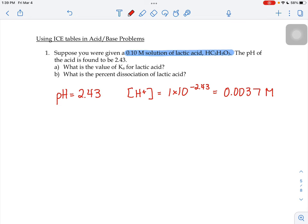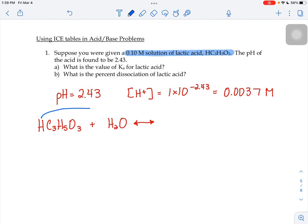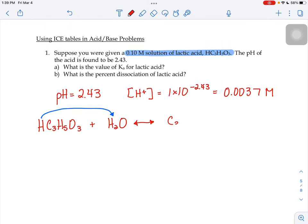So what I'm going to do is use an ICE table to help me figure out the Ka value. I'm going to take my lactic acid, and I'm going to put lactic acid in water. And my lactic acid is an acid, so it's going to be a proton donor. So it's going to donate the H to my water molecule. And when it does that, it's going to leave the lactate ion behind, and we'll get our H3O+ as well.